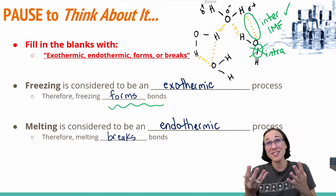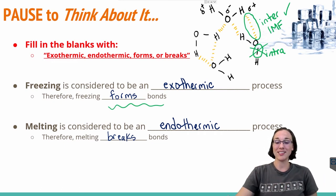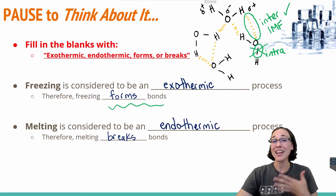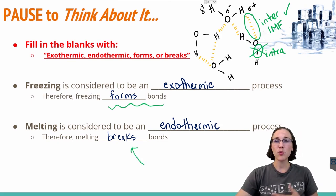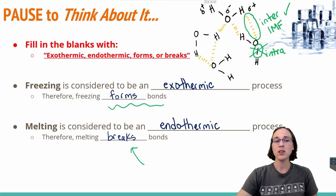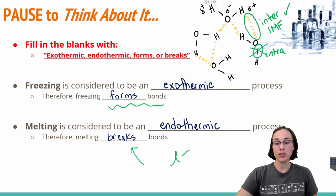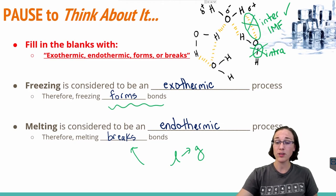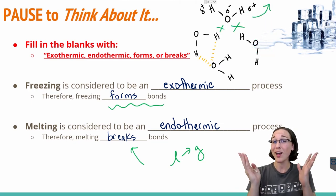Whereas melting water from solid to liquid is an endothermic process that requires heat. You have to add heat to solid ice in order to get it to melt, and when you add that heat it breaks or disturbs those intermolecular forces between the water molecules. If you continue heating and go from liquid to gas, that's when you fully break apart those intermolecular forces, causing the water to escape from itself and fly off as a gas.